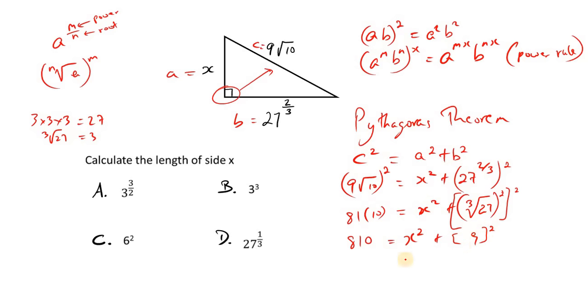And 9 squared is actually 81. So we'll have 810. Let's transpose this positive 81. 9 squared is 81, transpose it to the left. Now, so once we are transposing a term, the operation changes. So we have addition, it goes over as subtraction. So subtract 81 equals x squared.